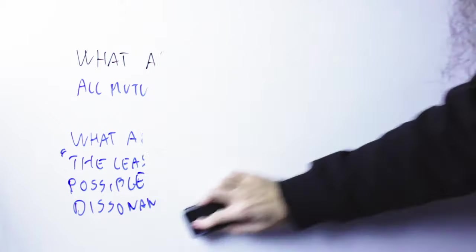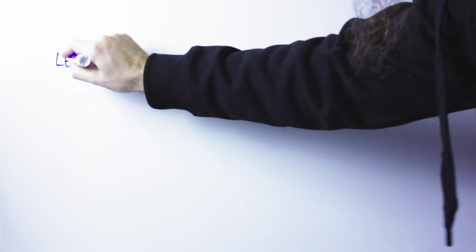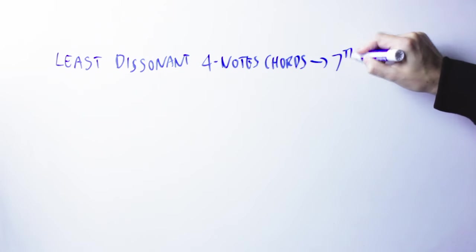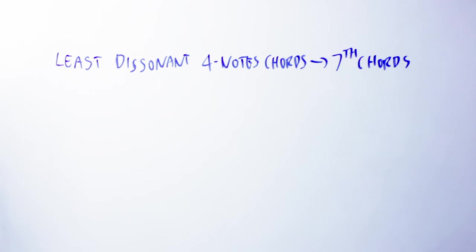But, what you can do, though, is you can try to pick the least possible amount of dissonances. So, you try to pick notes that are as consonant as possible. So, what turns out is that, hey, guess what? The seventh chords turn out, and their inversions, turn out to be that. Turn out to be the groups of four notes that have the least possible amount of dissonance.